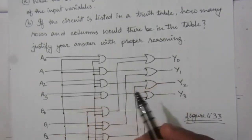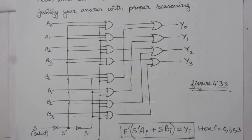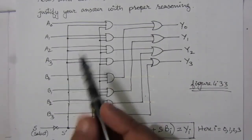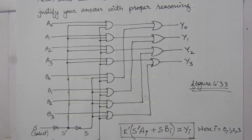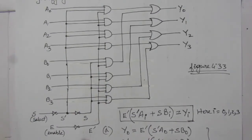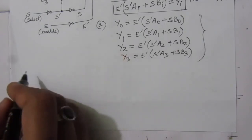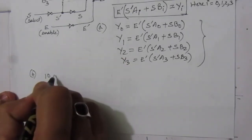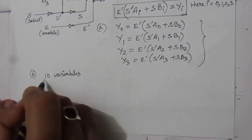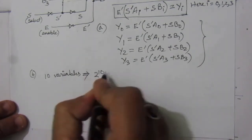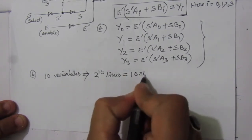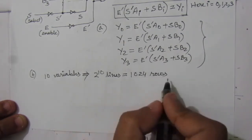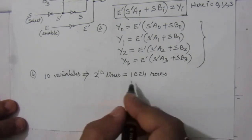For part B, to find the number of rows we count the number of inputs. We have A0 to A3 (4 inputs), B0 to B3 (4 inputs), plus the select line S and the enable line, giving 10 inputs total. Therefore we will have 2 to the power 10, which equals 1024 rows in the truth table.